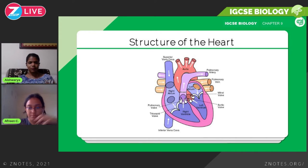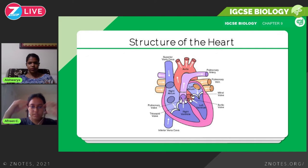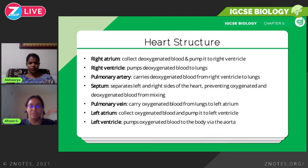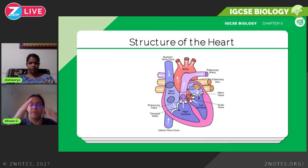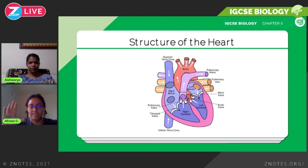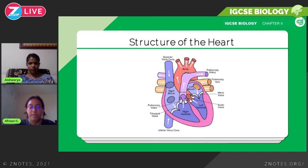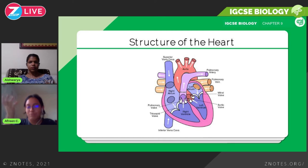The heart has four main chambers — the lighter purple parts are the atria and the darker purple are the ventricles. The heart is divided into a right side and a left side. When looking at a diagram, note carefully that your right side is not the same as the right side on paper — the right atrium on the diagram corresponds to your left side. This is a critical mistake to avoid, as the examiner will deduct marks.